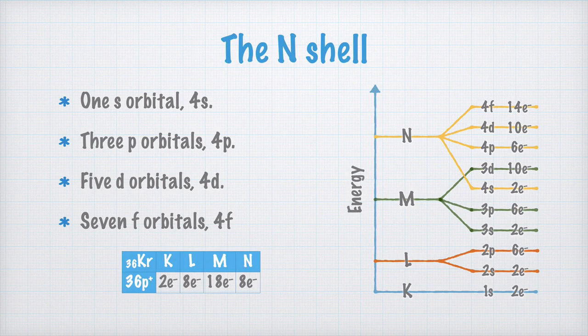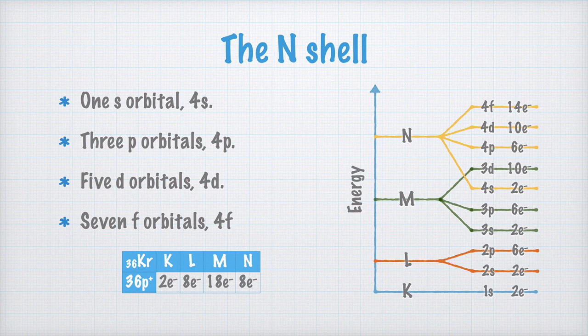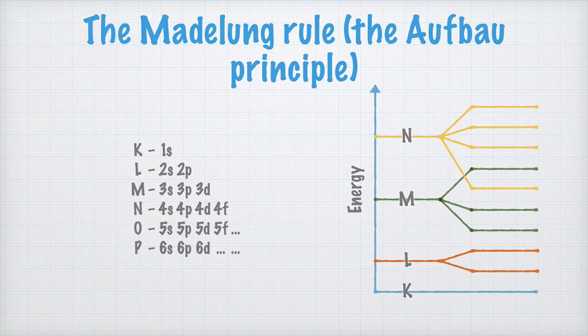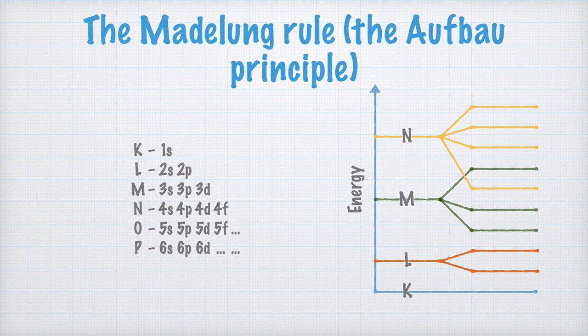Now that you've understood how the electrons are distributed, and that the energy levels of the orbitals overlap each other, it's time to learn a rule of thumb for how the electrons are distributed in the different atom species. This is called the Madelung rule after the German physicist Erwin Madelung, or the Aufbau principle.